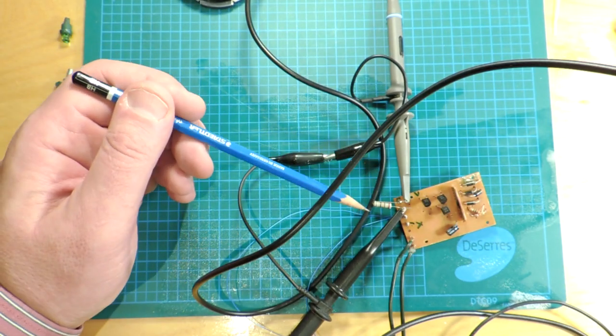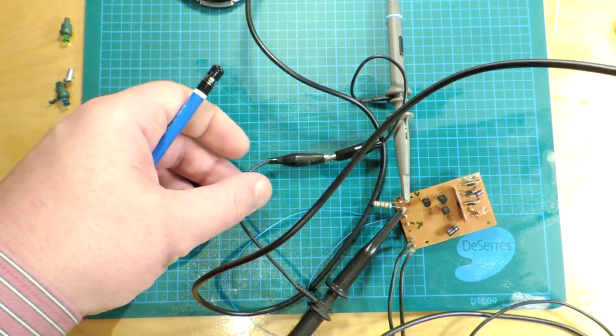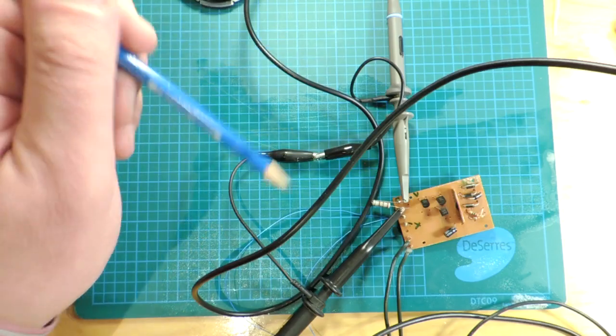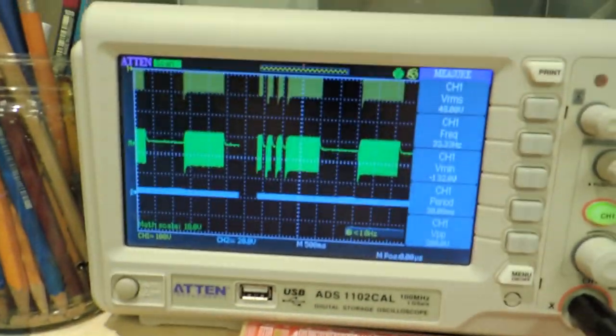Now because this is a non-isolated design, the output floats. I can't just connect the scope probe directly because there's no ground. I have to use this trick of doing some math on my oscilloscope. I need two probes, and I put my scope into a channel A minus channel B mode.